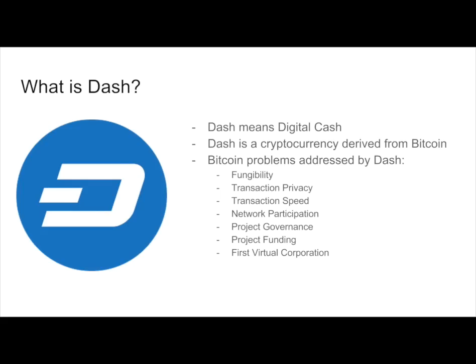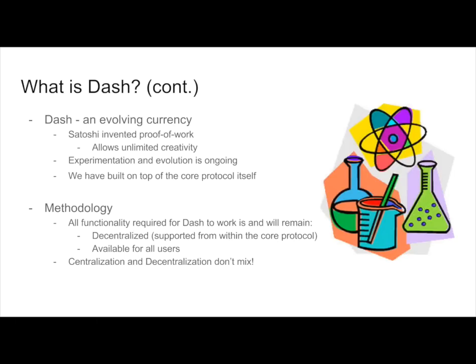Beyond that, we have permanent recurring funding. And beyond all of these features, we have set up the very first virtual corporation. One of the biggest differentiators between Dash and other projects is that we are constantly innovating within the Dash ecosystem, and we do this by innovating at the core protocol level. We want to create all of the services that a currency needs in completely decentralized ways, available to all users on the network forever, and get this technology right before we have a stable, maintainable infrastructure for the future.